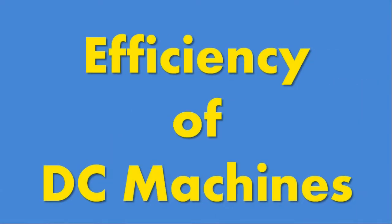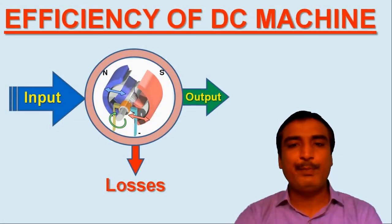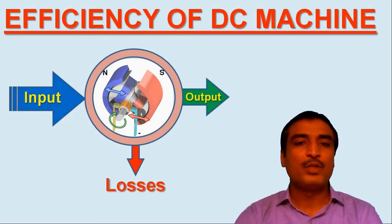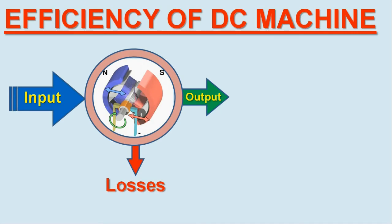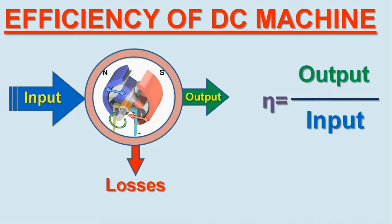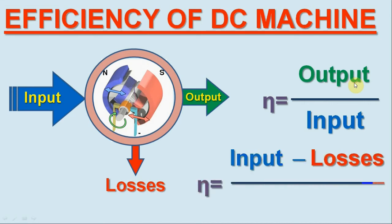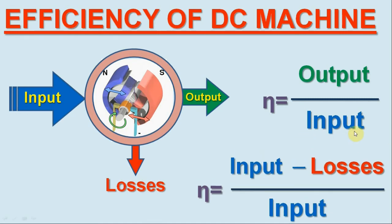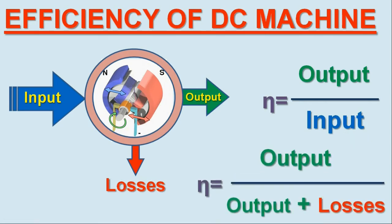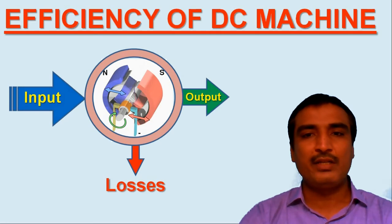Efficiency of DC machine: The efficiency of a DC machine, typically denoted by eta, is defined as the ratio of the useful output power to the input power. So we may write: eta = output / input. Now, the output can be expressed as input minus losses, so we have: eta = (input − losses) / input. Similarly, if we express input as output plus losses, then we have: eta = output / (output + losses). A detailed discussion on the efficiency of DC machines as well as the power flow diagram will be covered in the next video lecture.